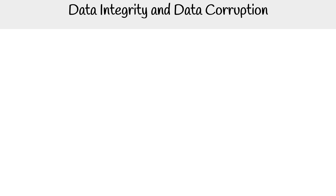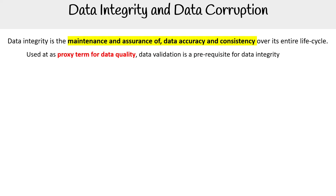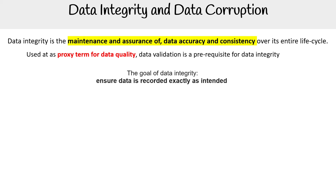Let's take a look at data integrity versus data corruption. Data integrity is the maintenance and insurance of data accuracy and consistency over its entire lifecycle, and it's often used as a proxy term for data quality. You might think it's data validation, but that's just a prerequisite of data integrity. Data integrity is about the entire lifecycle — making sure overall that data stays consistent. So validation is just one part of it.